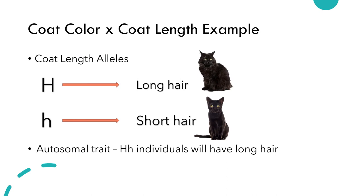Now that we have an understanding of coat color, what happens if we add in coat length? In this example, we will take into consideration the same coat color alleles from the last slide, along with two new autosomal alleles for coat length.